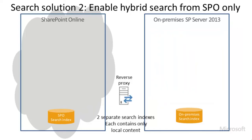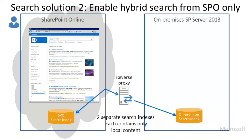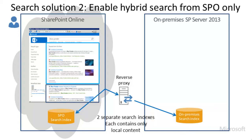In Hybrid SharePoint Search Solution 2, when a user types a query in a search box in SharePoint Online, the query is sent to the local search index and it is also sent through a reverse proxy to the remote SharePoint Server 2013 search index. The search then returns results from both indexes so that the user can view the results in SharePoint Online. And, as in Search Solution 1, we can choose to show the results that are from the remote index in a single block at the top of the search results page and show local results below that.